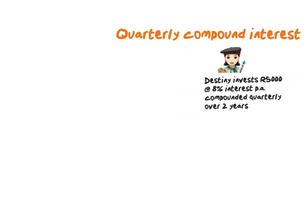You could also be asked to do compound interest quarterly. The question will give you the interest per annum and say it's compounded quarterly. If I get 8% interest per year, I split 8% into four equal percentages, so each period will be 2%. Over a two-year period, how many quarters will I have? In the first year I have 4 quarters, and in the second year another 4, meaning over two years I will get 8 quarters at 2% interest each.